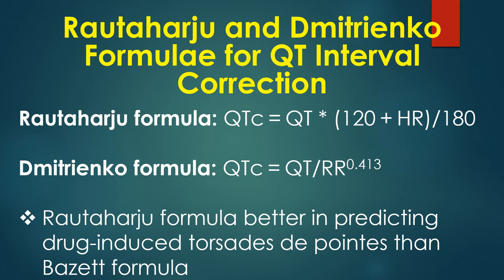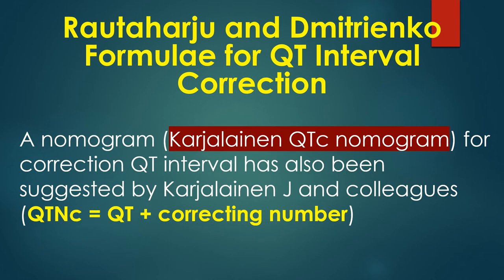Ratharju formula has been shown to be better in predicting drug-induced torsades de pointes than Besset's formula.